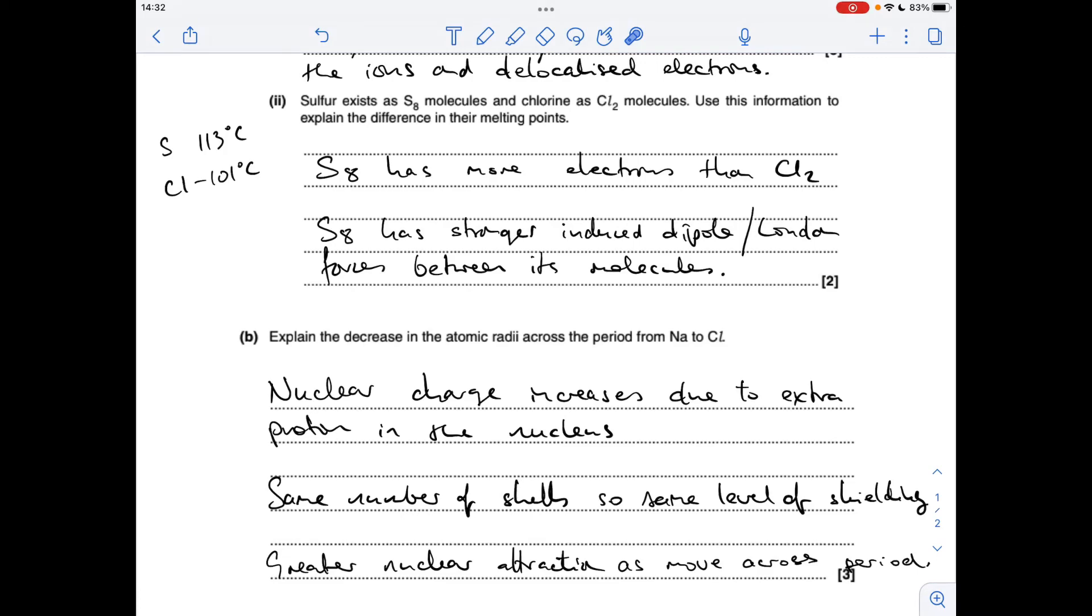Next thing is the number of shells. In the same period, you've got the same number of shells, so you've got the same level of shielding. And then the final thing, as a result of these two factors, there's greater nuclear attraction in the atom as you move across the period. That will pull the electron shells in closer to the nucleus.